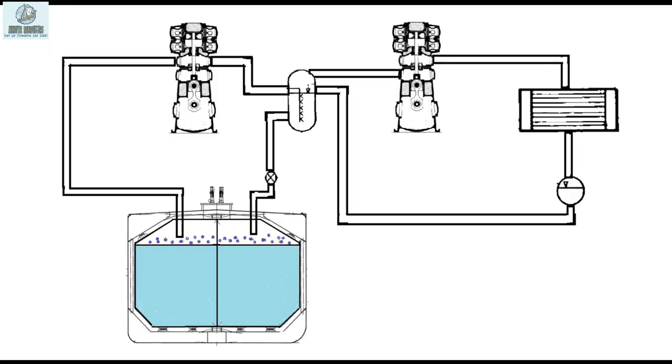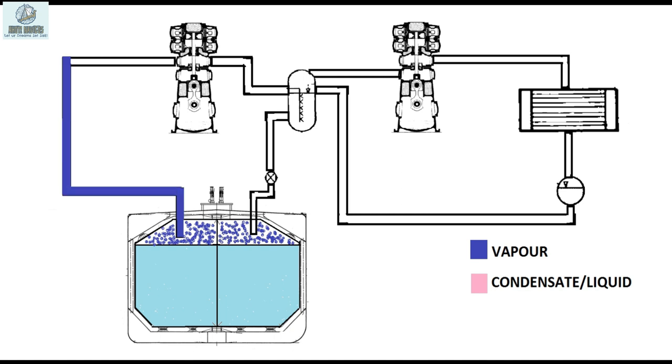Let us see the working now. For the purpose of understanding let us color code the boil off as blue and condensate as pink. Boil off from the cargo tank are drawn by the compressor through the vapor line.